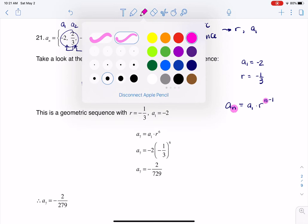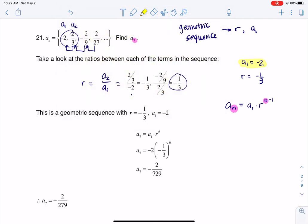And then matching all of this up, I'm going to take a_1 being negative 2 and put that in there, and then I'm going to take my r being negative one-third and plug it in here. And that's going to allow me to solve for a_7.